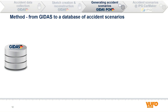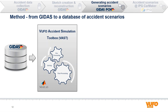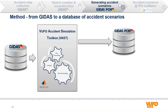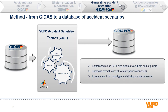So how do we get from GEDAS to a database of accident scenarios? The presented data from GEDAS serves as input to the FUFO accident simulation toolbox. The toolbox extracts all pre-collisionary relevant information, processes the data and converts it into the PCM format. Then a database can be created, the so-called GEDAS PCM. The PCM format is a structured database format established in 2011 in cooperation with automotive OEMs and suppliers. The advantage of the PCM format is the possibility to store real accident scenarios from simulations with arbitrary solvers and real driving data from different data sources.